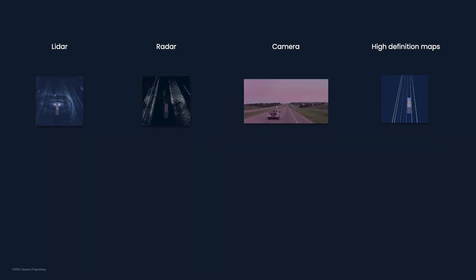One challenge with sensor fusion is that different sensors have different resolutions and views of the world. Sensor-to-Tensor progressively extracts and stores information from the different sensor views of the world and brings them into a common 3D representation we call the Euclidean tensor view. LiDAR data is projected into two views: the 3D Euclidean view and a wraparound range view. Projecting LiDAR data into two views gets the most out of the sensor's capabilities. The Euclidean view gives us precise 3D and velocity information, and the range view makes the most of the azimuth resolution and long-range capabilities of the sensor.